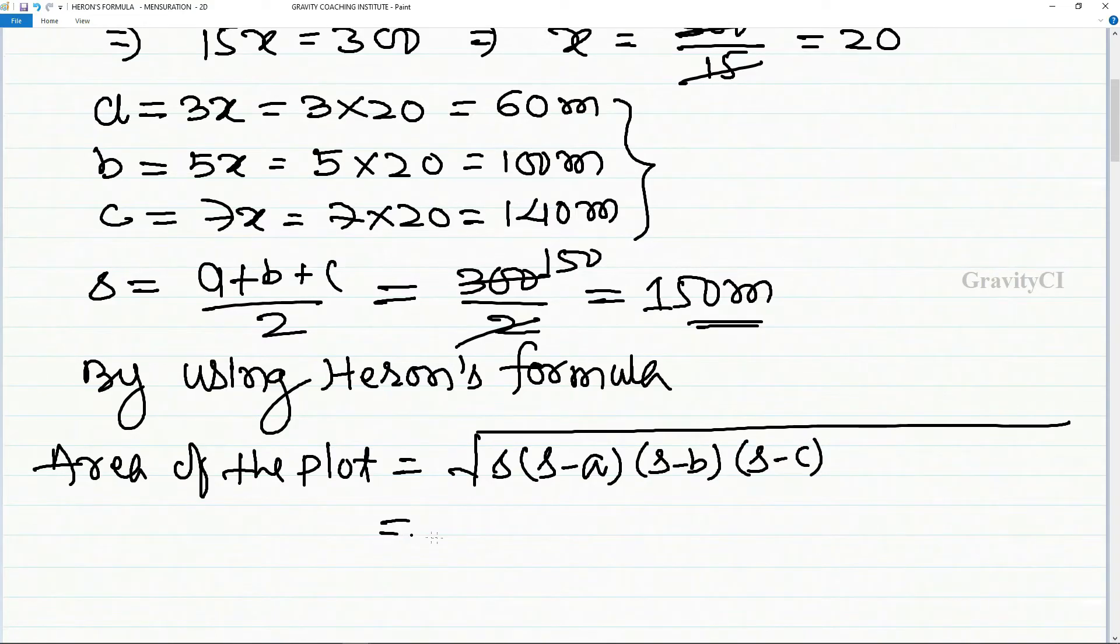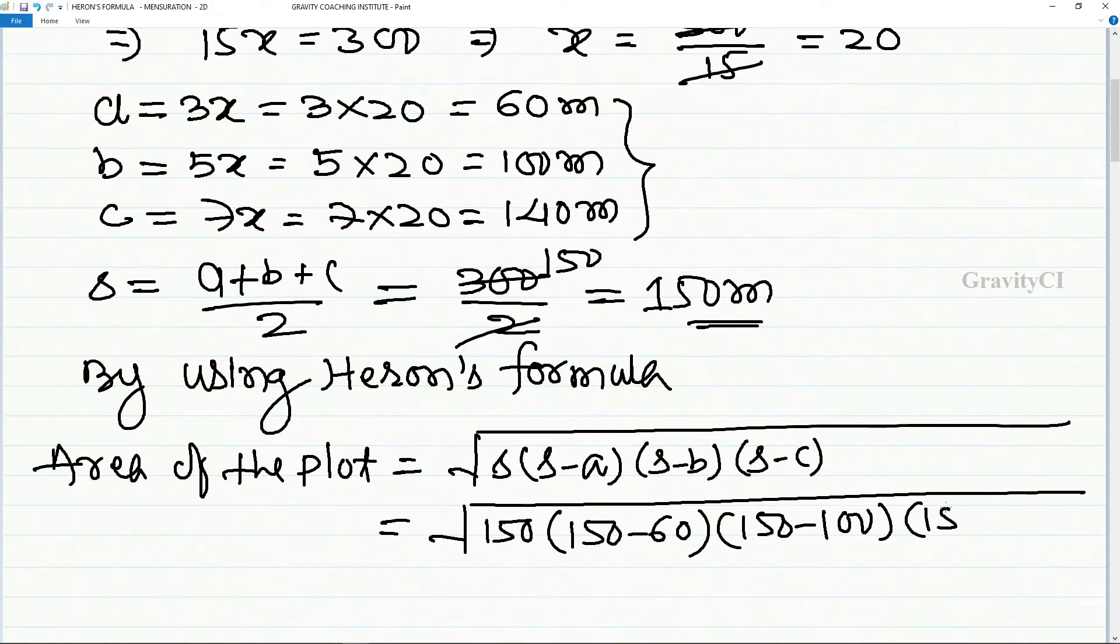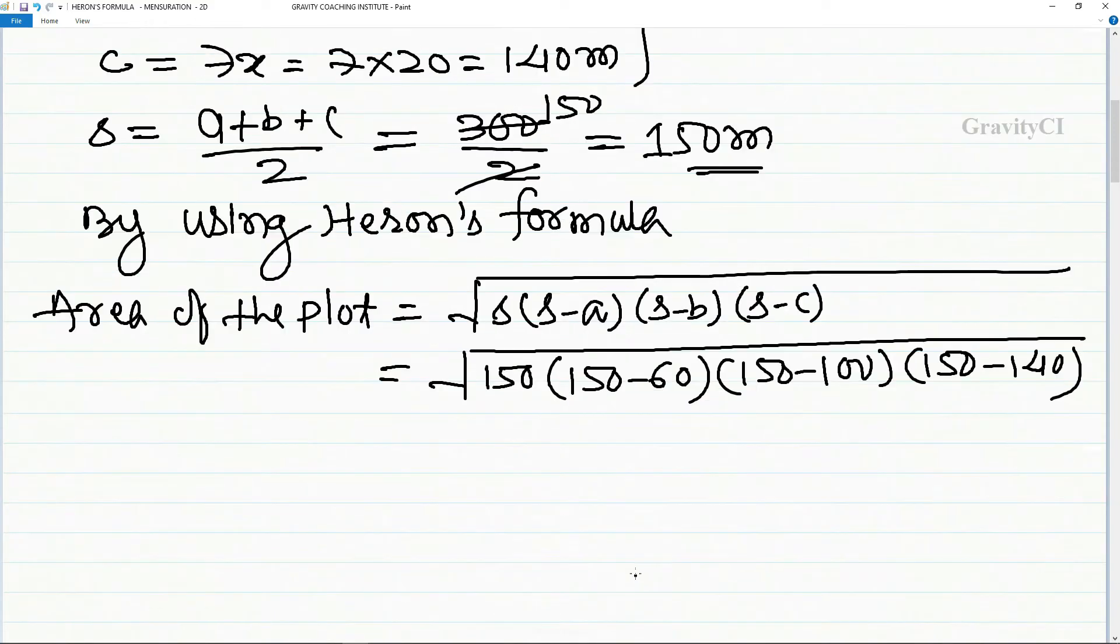This equals the square root of 150 times 150 minus 60 times 150 minus 100 times 150 minus 140, which is the square root of 150 times 90 times 50 times 10.